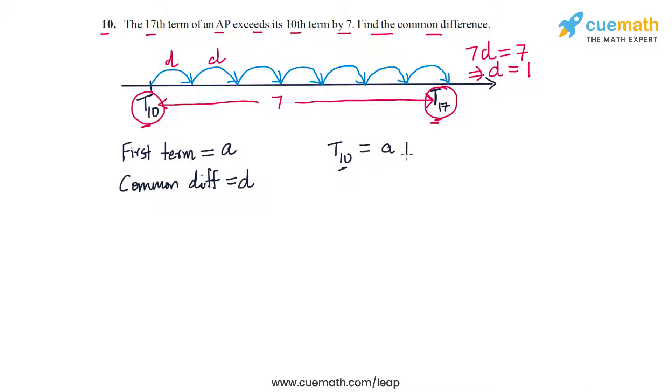Now we will make use of the fact that t17 exceeds t10 by 7. So t17 minus t10 should be equal to 7. T17 is a plus 16d. This means that a plus 16d minus (a plus 9d) should be equal to 7. From here we see that the a terms cancel out, and we are only left with 16d minus 9d, so that's 7d. This is equal to 7, or d is equal to 1. We get the same answer as when visualizing the key idea behind the problem.